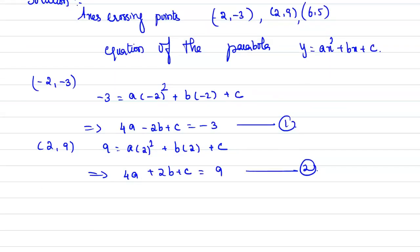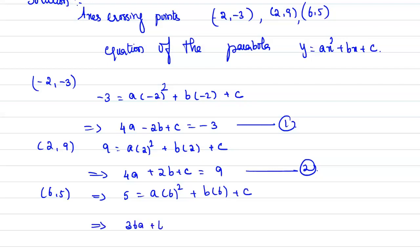Then consider the point (6, 5). Substituting into the equation of the parabola gives: 5 = a(6²) + b(6) + c, which implies 36a + 6b + c = 5. Mark this as equation 3.